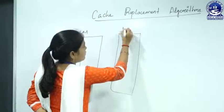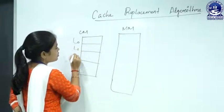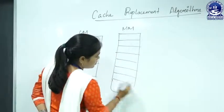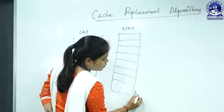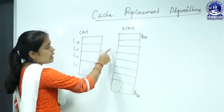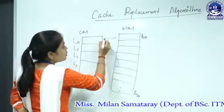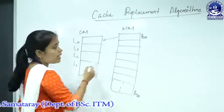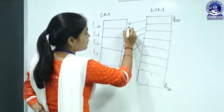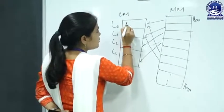Let's consider this cache memory includes four lines and this main memory has 32 blocks, so it is B0 to B31. When we map the blocks into the cache memory by using the direct mapping technique, then B0 will be mapped into L0, B1 into L1, B2 into L2, B3 into L3, then B4 again into L0, like this.